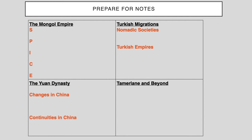The notes I want you to write are notes that you will understand as it relates to what I'm talking about. You don't have to copy everything I say or write down what's on the screen — you just have to be able to understand the section, specifically the nomadic societies and the Turkish empires. In the next video, you'll finish the rest: the Mongol, the Yuan, and Tamerlane and beyond. So now let's go ahead and get started.